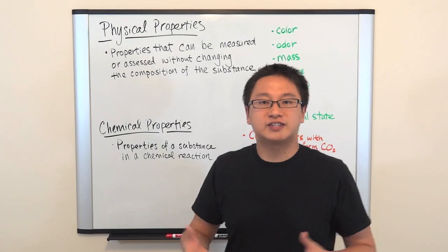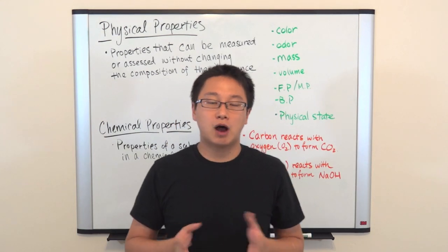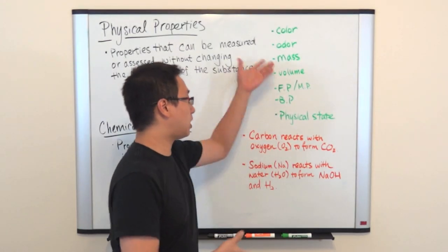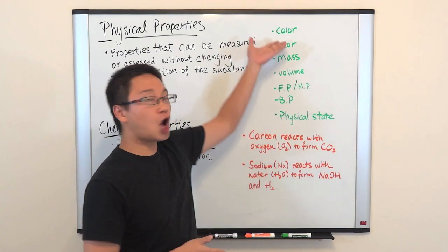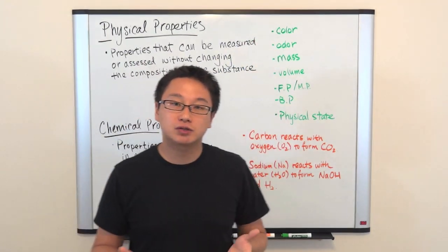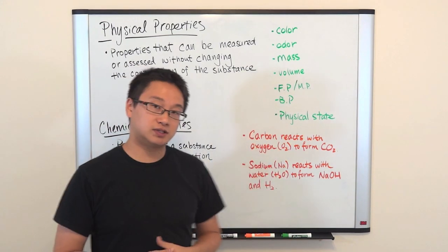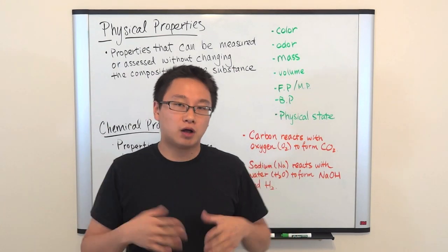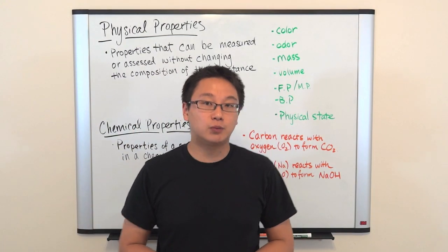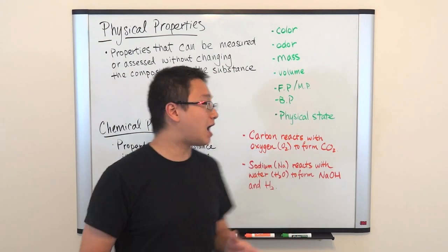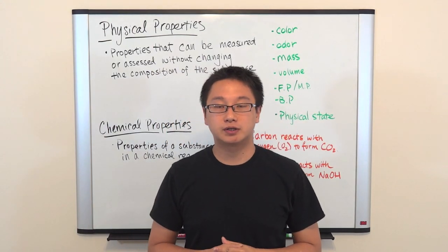Let's look at some examples of physical properties. Here on the green list are a few physical properties — there are more, but these give a taste of what physical properties are. We have color, odor, mass, volume, freezing point or melting point, boiling point, and physical state. We could also talk about electrical conductivity and heat conductivity, but we'll limit our discussion to these for now.